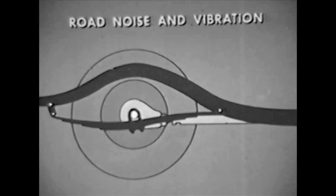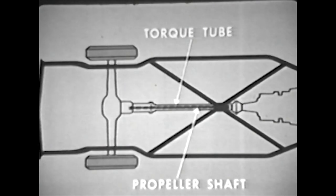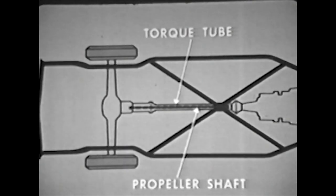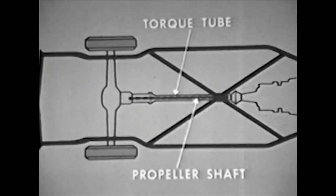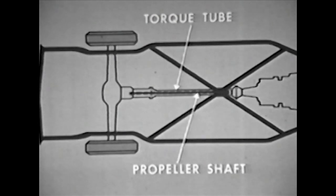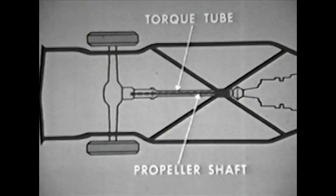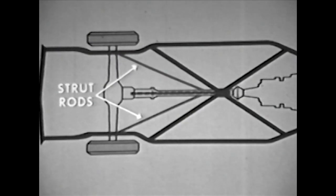Now consider Buick's torque tube drive. The torque tube is a hollow steel tube surrounding the propeller shaft, solidly coupled to transmission and rear axle. Along with the strut rods, it absorbs all the driving thrust completely independent of the car's springs.